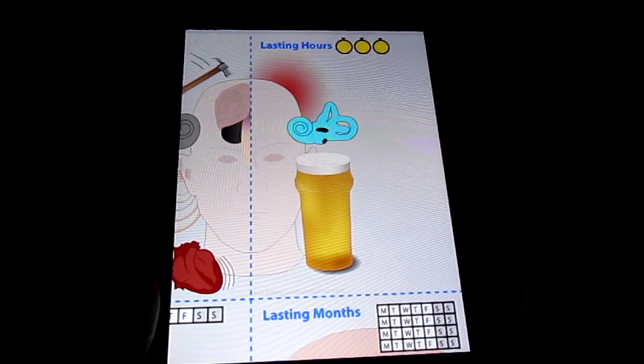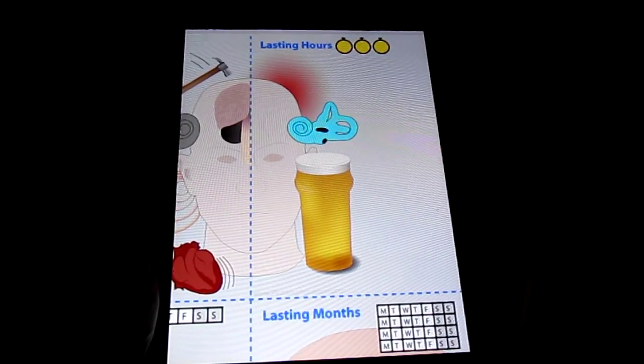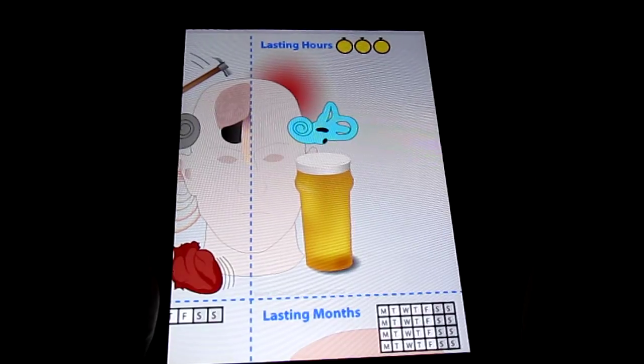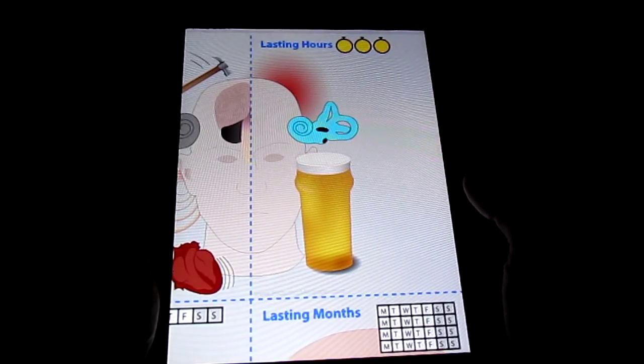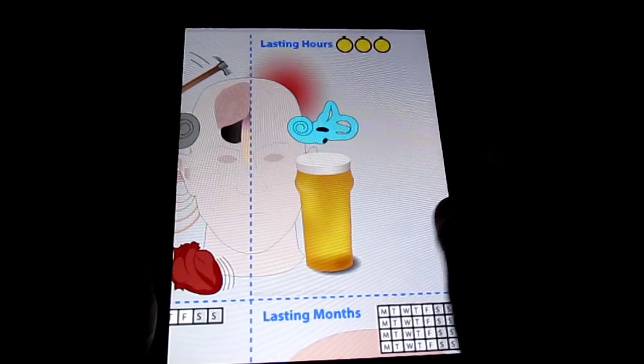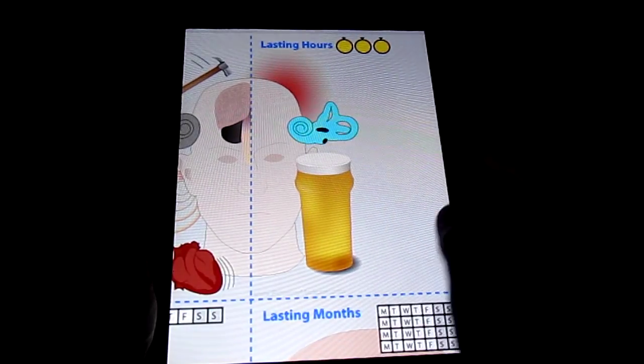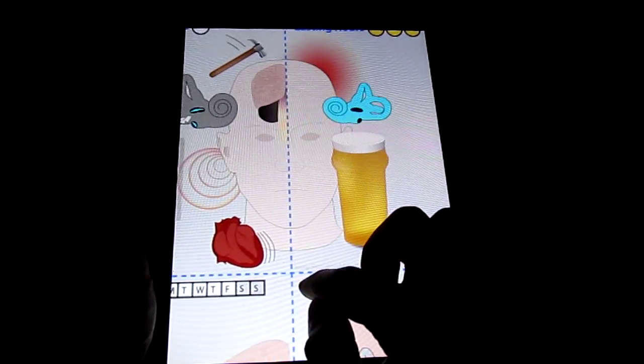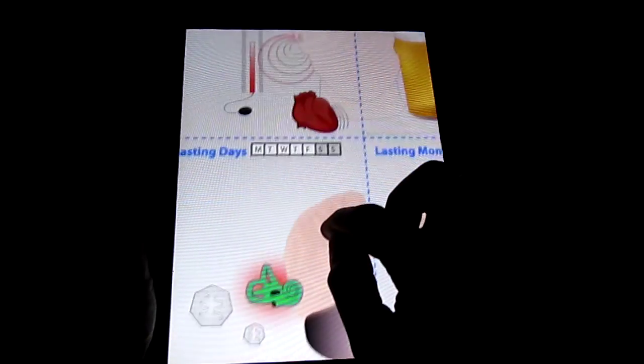This leads not only to vertigo but typically to tinnitus or ringing within the ear and also hearing loss as well. And then we've also got alcohol consumption as a cause of vertigo, causing the room to spin around you.